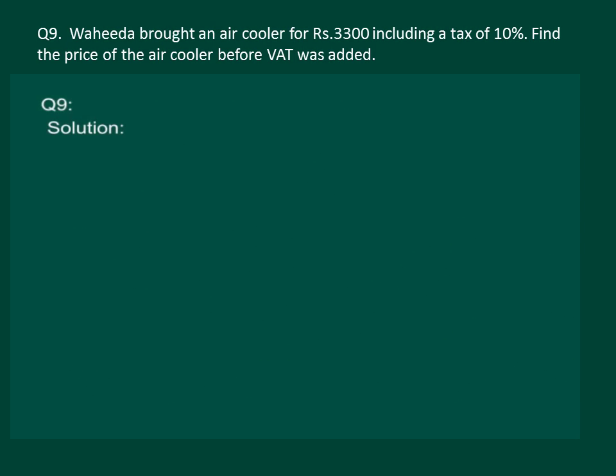Please read question 2 on the slide. Vahida bought an air cooler for Rs. 3300 including a tax of 10%. We have to find the original price before tax was included. Let's use the unitary method to solve this question. It is given that 10% tax was levied.